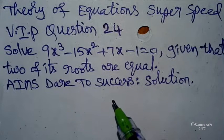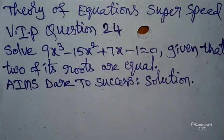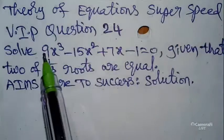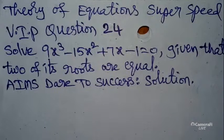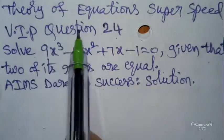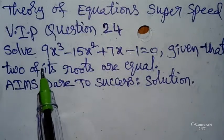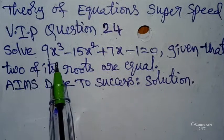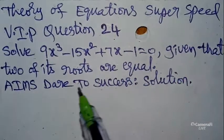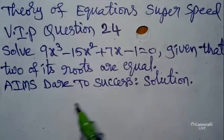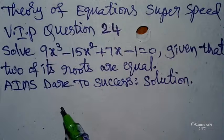Hello, namaste, my dear friends and students. Today I came with a new trick and a new video. I wanted to discuss with you Theory of Equations — super speed VIP question, the fourth part. I have already uploaded 23 parts with 23 VIP questions from the Theory of Equations chapter. Today our question is: solve 9x³ - 15x² + 7x - 1 = 0, given that two of its roots are equal.